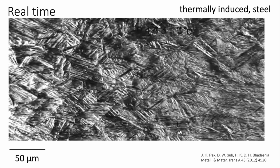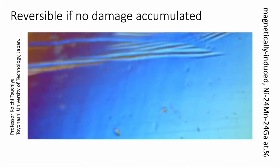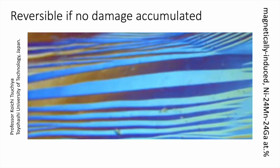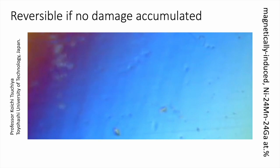If I reverse the temperature or whatever is inducing the transformation, it should be possible to get rid of the shape change and for the sample to become flat again. I'll illustrate that with another movie of a particular material in which we can magnetically induce a phase transformation. We apply a magnetic field, cause a phase change with massive upheavals, then reverse — and you can see that the sample becomes flat again. It's a beautiful example of reversible phase transformations.